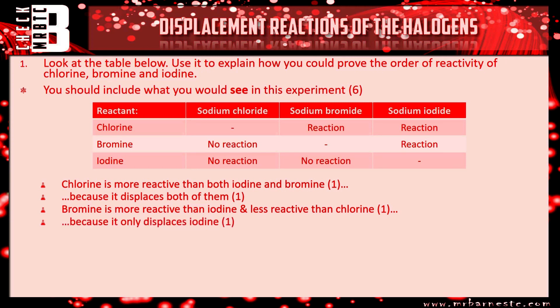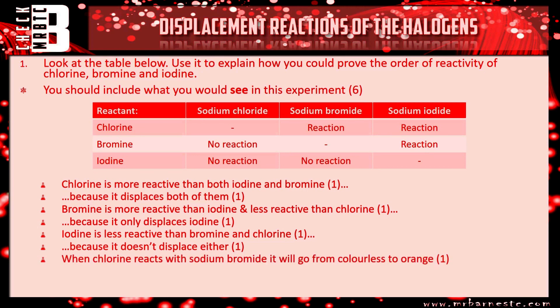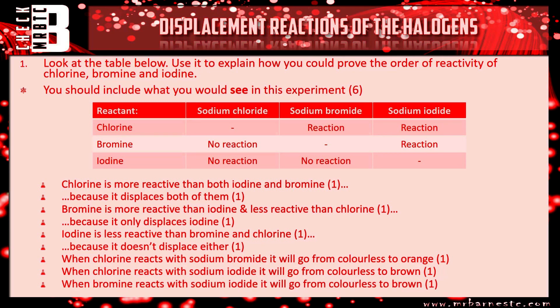For iodine: there's no reaction, therefore it is less reactive than bromine and chlorine and will not displace either. For the colour changes: when chlorine reacts with sodium bromide, it goes from colourless to orange; when it reacts with sodium iodide, it goes from colourless to brown. Similarly with bromine, when it reacts with sodium iodide, it goes from colourless to brown.